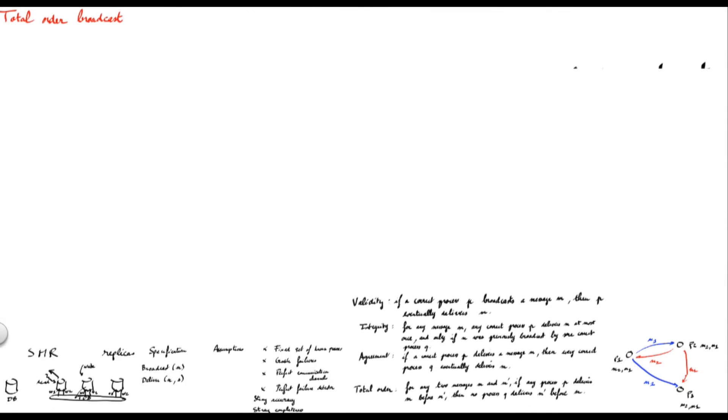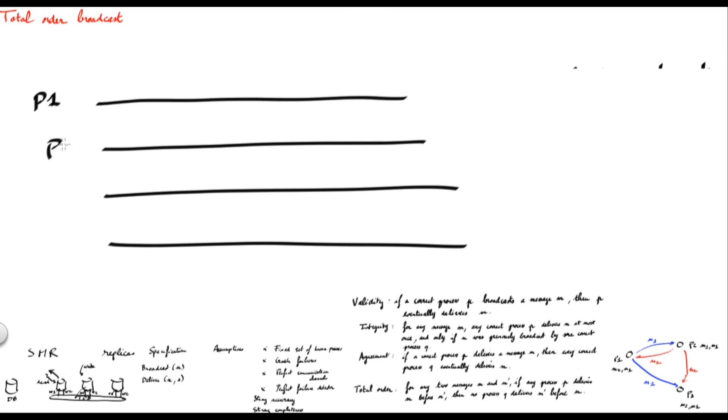So let me now present you a very simple protocol that implements this specification. This protocol is called Fixed Sequencer Total Order Broadcast. Let us take an example with four processes: P1, P2, P3, and P4. Remember that we made the assumption that we have a fixed set of known processes, meaning every process knows the list of other processes. Let us also remember that every process uses a failure detector, which is perfect, which means that failures of processes will accurately be detected.